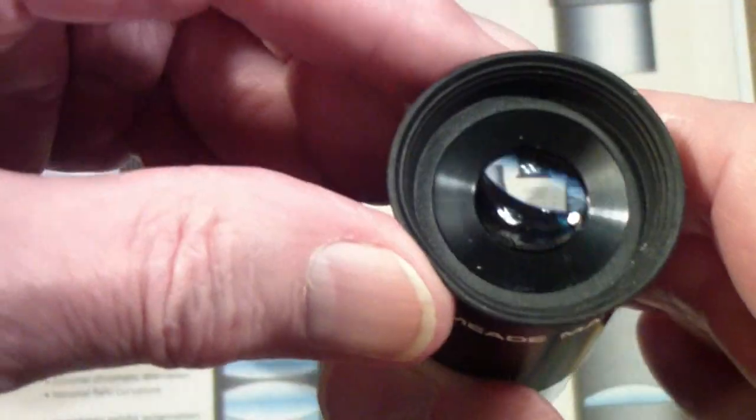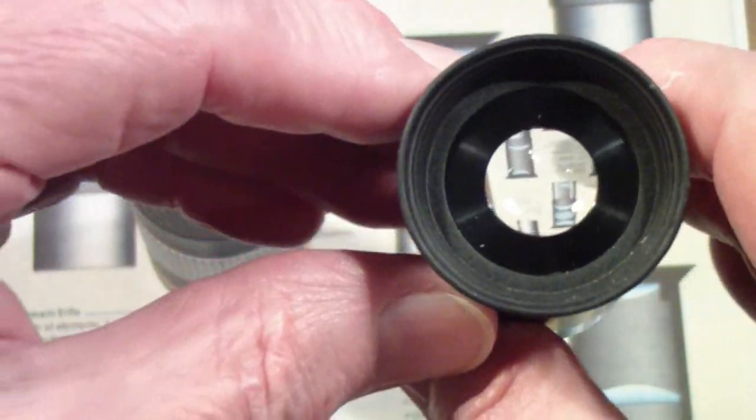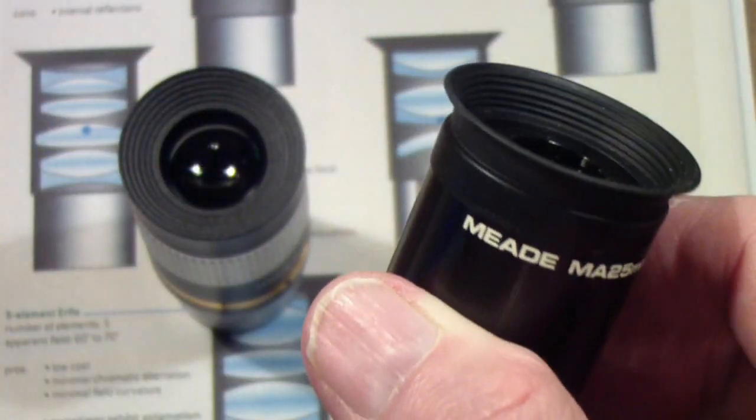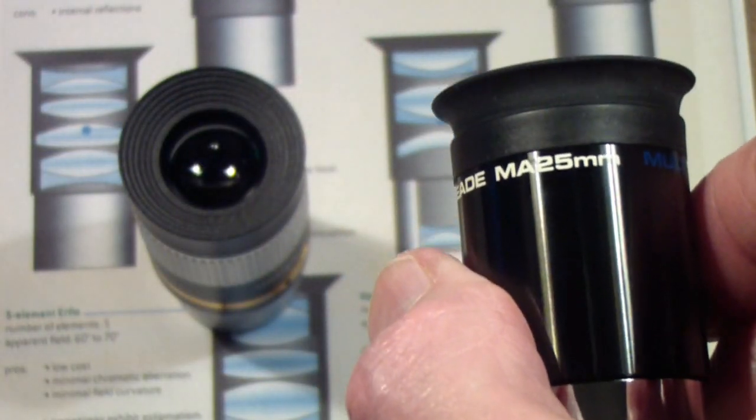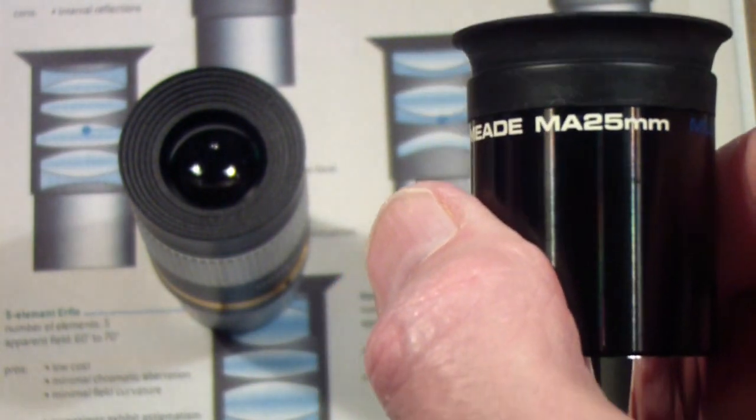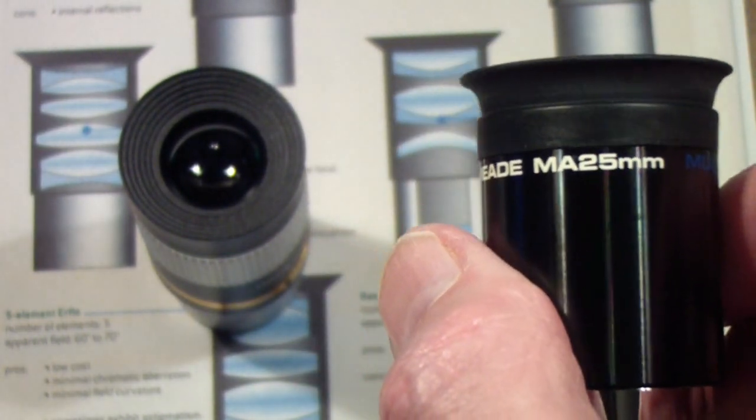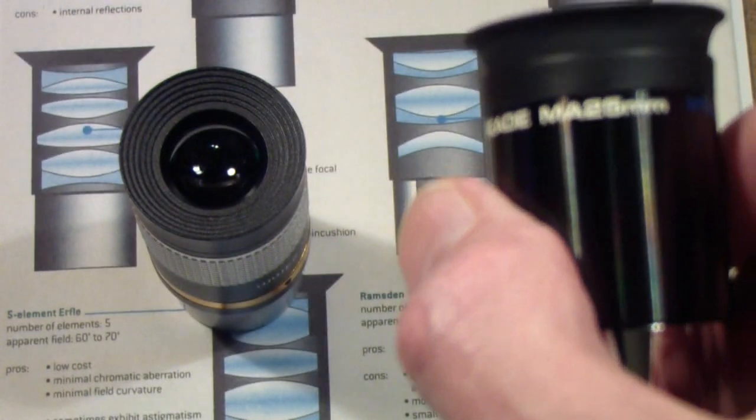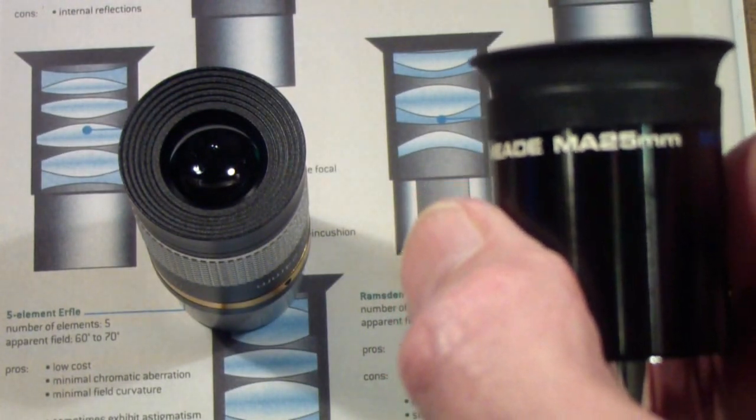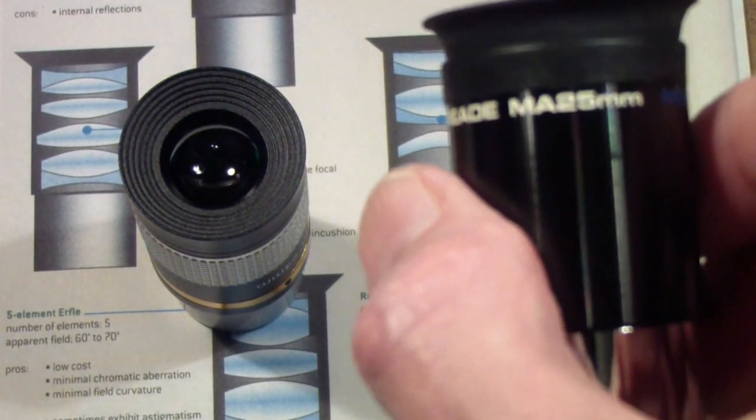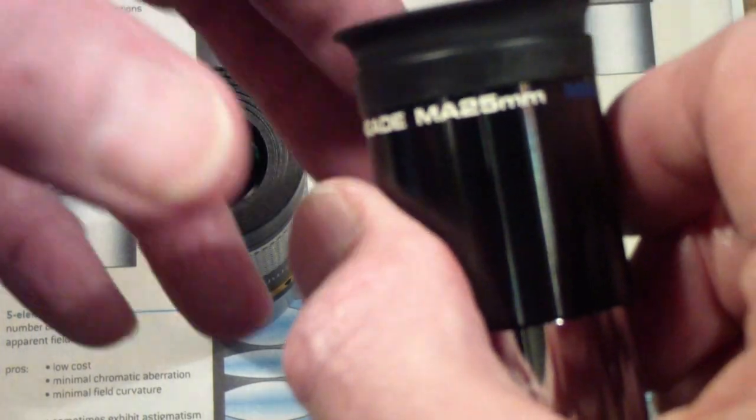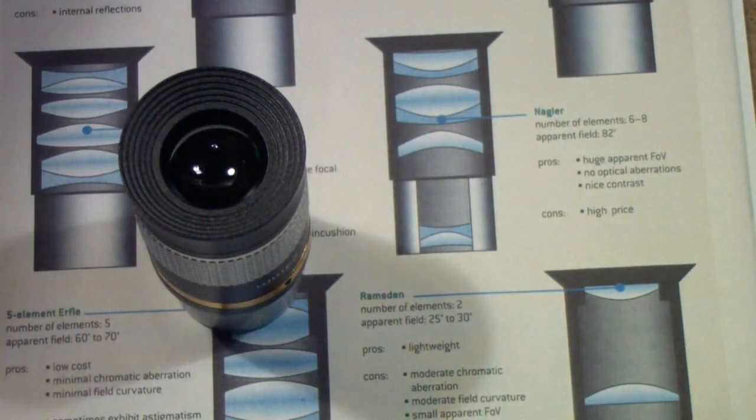This is a rather simple, relatively inexpensive eyepiece. You can get eyepieces for as little as a few dollars and up to many hundreds of dollars—and we're just talking amateur here. In professional observatories, you're talking thousands and tens of thousands of dollars.